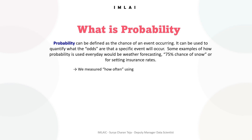Some examples of how probability is used every day would be weather forecasting — saying there's a 75% chance of snow — or for setting insurance rates. The probability of an event is basically calculated by dividing the number of favorable outcomes by the total number of possible outcomes.